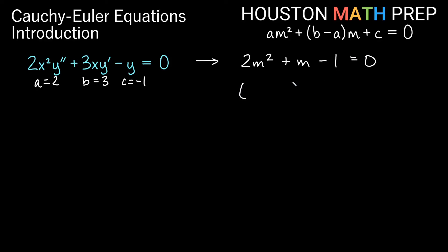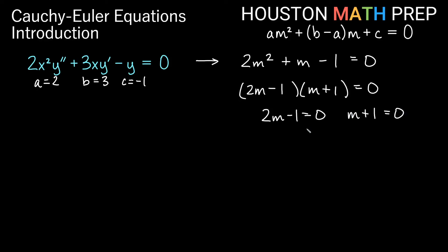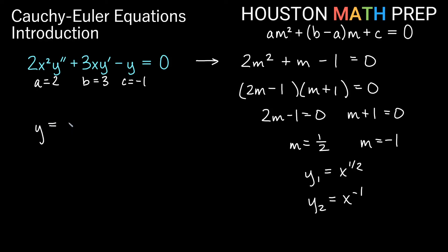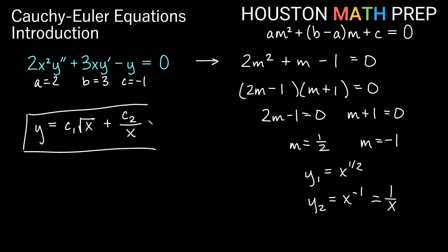This factors as 2m minus 1 times m plus 1 equals zero. Setting each factor to zero: 2m minus 1 equals zero gives m equals one half; m plus 1 equals zero gives m equals negative 1. So y1 is x to the one half, and y2 is x to the negative 1. Writing the general solution more cleanly: c1 times the square root of x plus c2 over x, avoiding negative exponents.